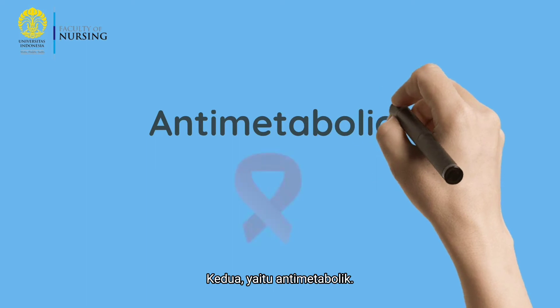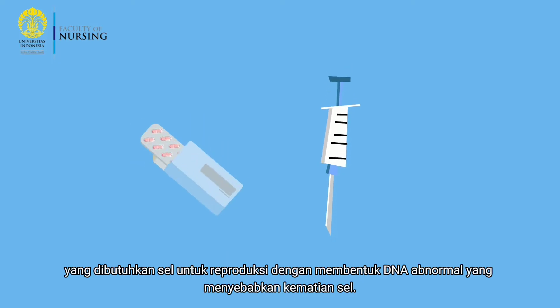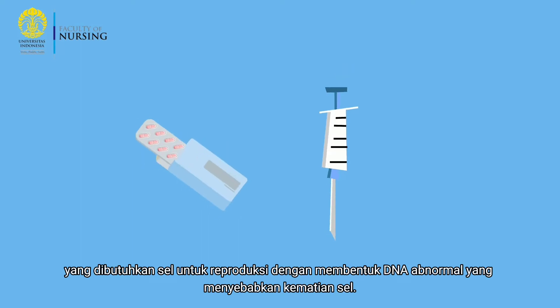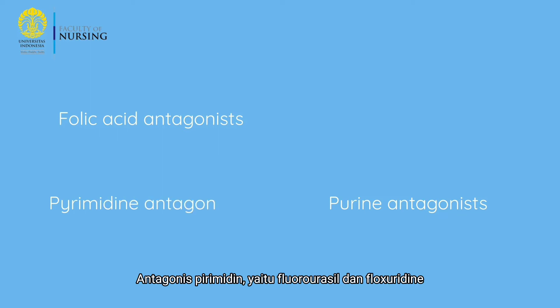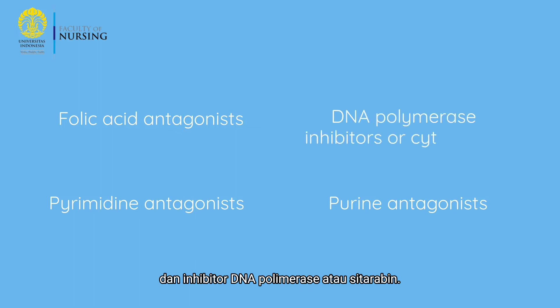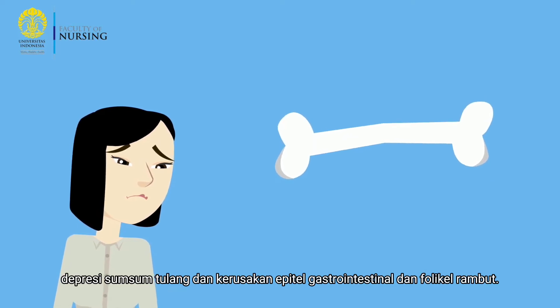Second is anti-metabolics. Anti-metabolics are oral and parenteral drugs that work by resembling the nutrients that cells need for reproduction, forming abnormal DNA that causes cell death. Examples include folic acid antagonists such as methotrexate; purine antagonists, which are mercaptopurine and thioguanine; pyrimidine antagonists, which are fluorouracil and floxuridine; and DNA polymerase inhibitors, or cytarabine. The toxic effects of anti-metabolic drugs are bone marrow depression and damage to the gastrointestinal epithelium and hair follicles.